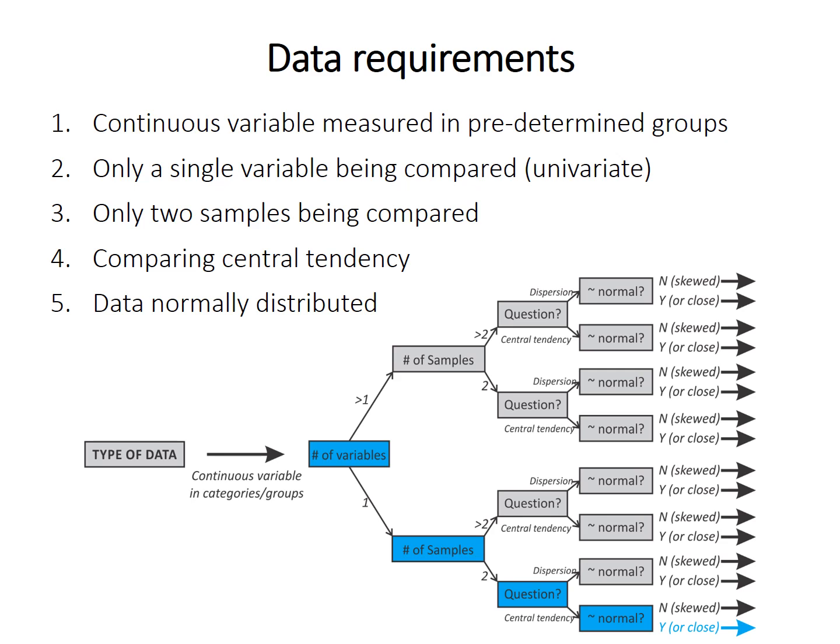If you follow the flow chart, you can see how you go from continuous data, one variable, two samples, to central tendency with normal distribution.